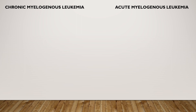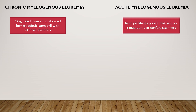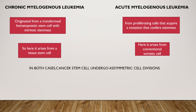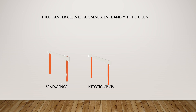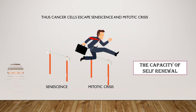Chronic myelogenous leukemia originates from a transformed hematopoietic stem cell with intrinsic stemness, whereas acute myelogenous leukemia arises from proliferating cells that acquire a mutation that converts stemness. So chronic myelogenous leukemia arises from a tissue stem cell, while the acute form arises from a conventional somatic cell. In both cases, cancer stem cells undergo asymmetric cell divisions and give rise to committed progenitors that proliferate more rapidly than the cancer stem cells. In summary, cancer cells inactivate senescent signals and reactivate telomerase, thereby escaping senescence and mitotic crisis, and they also have the capacity for self-renewal.